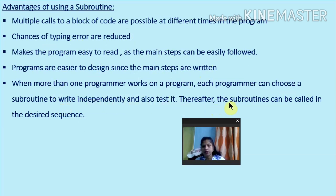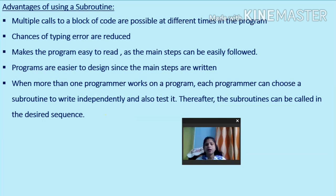When more than one programmer works on a program, each programmer can choose a subroutine to write independently and test it. Thereafter, the subroutines can be called in the desired sequence. When a big program is being designed, the work is distributed among different programmers. Individually all the programmers work on a part of the program, and later on they combine all the parts to make the complete big program.